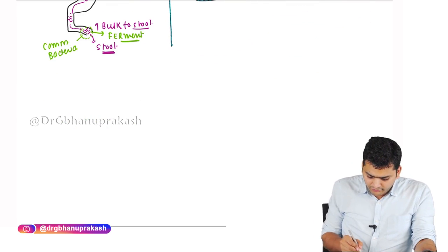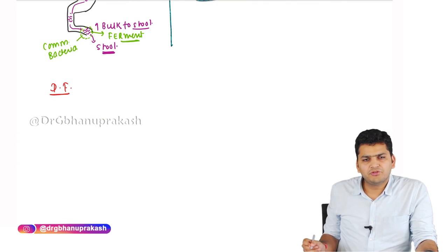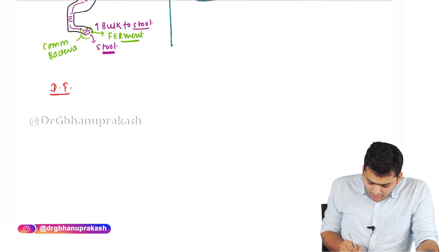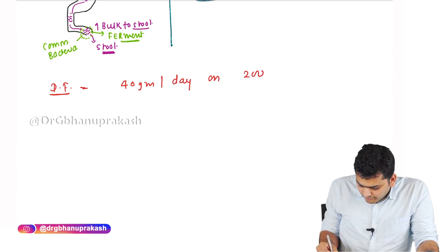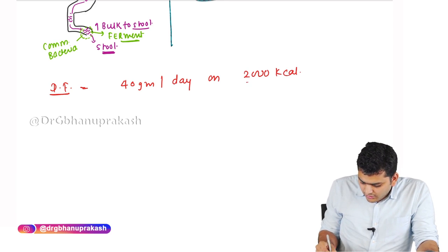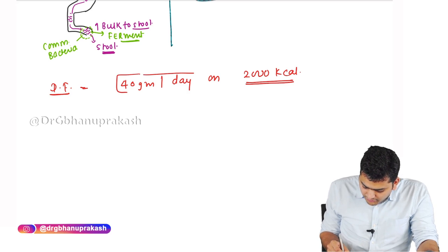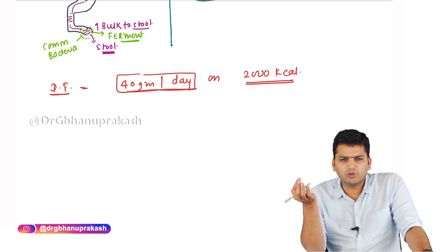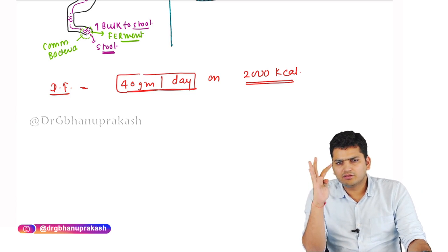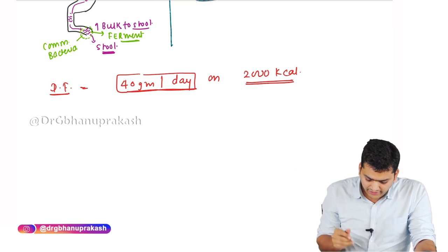How much dietary fiber should one eat every day? At least 40 grams of dietary fiber should be taken per day based on a 2000 kilocalorie diet. Since most adults consume approximately 2000 kilocalories, everyone should eat at least 40 grams of dietary fiber per day.